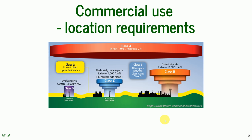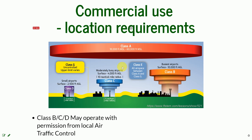The commercial use of UAS is also regulated by where you can fly. There are location requirements, and here we have a chart that shows schematically how the airspace is divided into classes. Class A is everything above 18,000 feet and it is forbidden to fly a drone there. Classes B, C, and D are closer to airports — you can operate a UAS there only with permission from the local air traffic control. Class B covers the biggest airports, Class C covers smaller airports, and Class D covers even smaller airports.